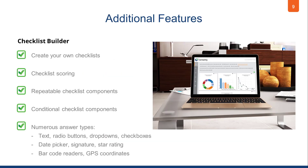Some additional features of Certainty include the Checklist Builder, meaning you can create your own inspection checklists or modify ours. You can include scoring, repeatable checklist components, conditional checklist components, and virtually any answer type you need, including the obvious ones like text, radio button, or dropdowns, but also advanced options like date picker, star rating, signatures, barcodes, and even QR code readers and GPS coordinates.